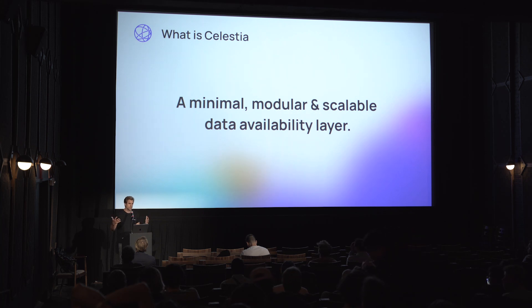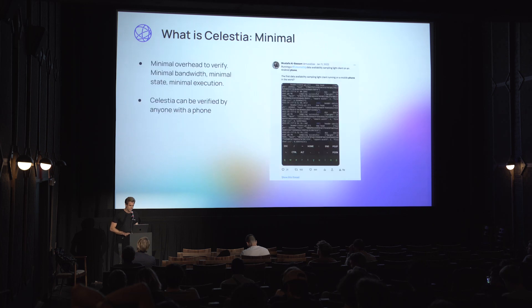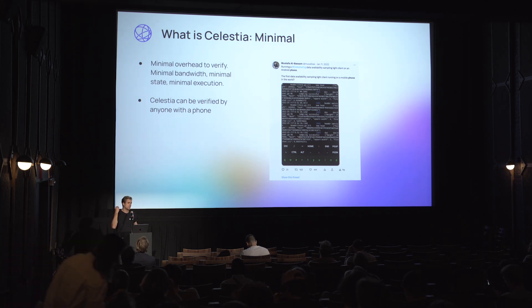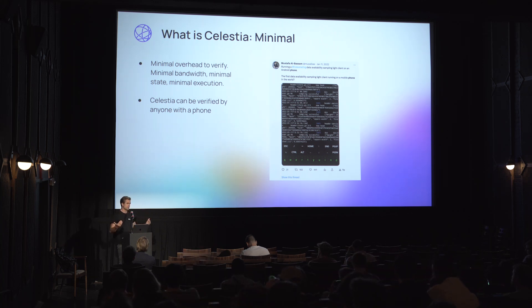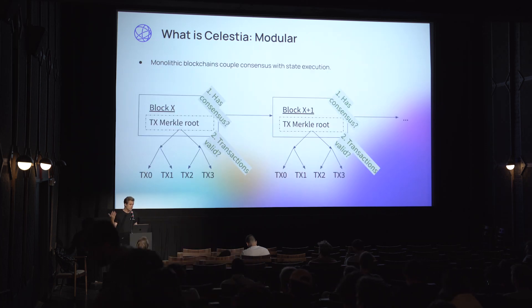In that paper, he described the goal to build a minimal, modular, and scalable data availability layer. When we say minimal, we want it to have a minimal amount of overhead to verify — you shouldn't need much bandwidth, much state or storage, or much execution to verify the chain. The end goal is that everyone with a smartphone should be able to verify the Celestia blockchain, because that's how we reach maximum decentralization.